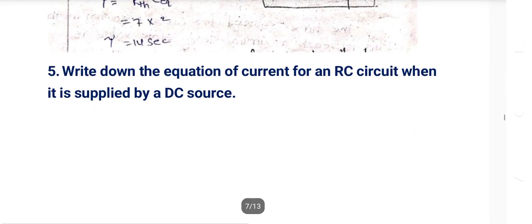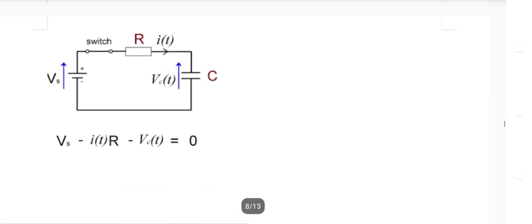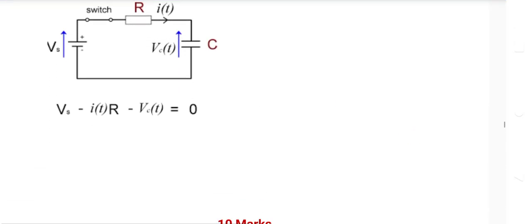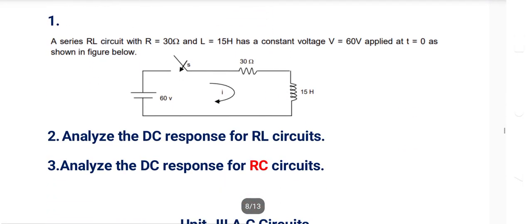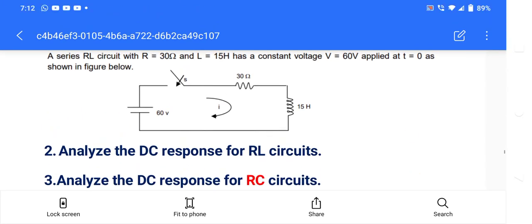Define steady state and transient state — a 2-mark question. Steady state is when the system output is stable. Transient state is when the system response changes with respect to time between two steady states. Find the time constant for the given circuit: remember tau = RC or tau = L/R, but R is the Thevenin resistance (Rth) seen from the capacitor or inductor terminals. For 10-mark questions: analyze the DC response of RL circuit and RC circuit — switch closed at T=0, and you must know conditions at T=0+ and T=0−.